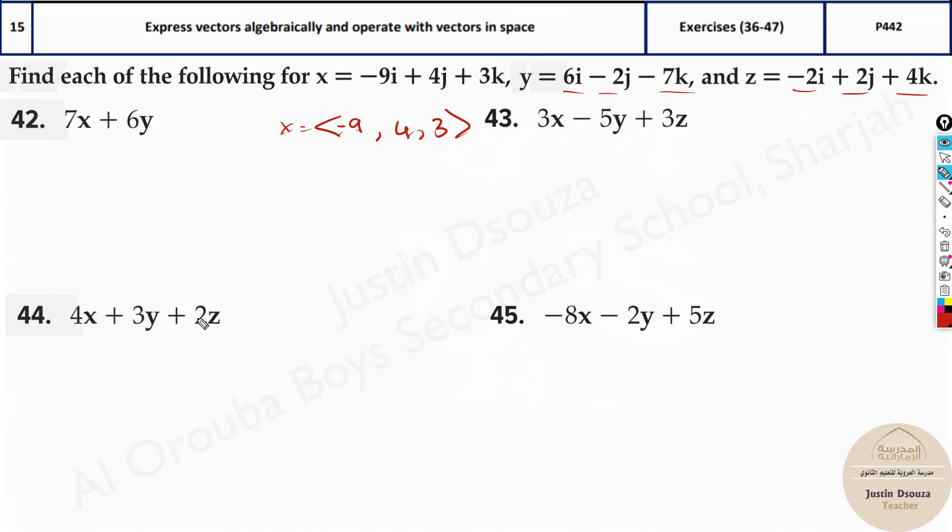Use the same method over here then, 7 times this entire, all the terms plus 6 times the entire terms over here and add them up, you will get the answers. So this is how we basically solve these.